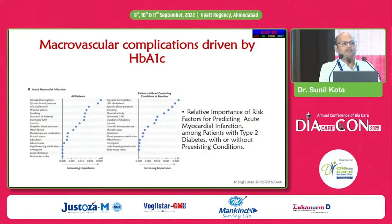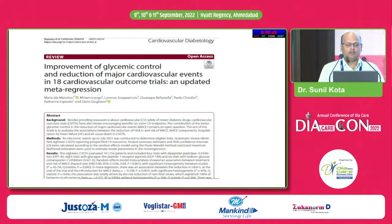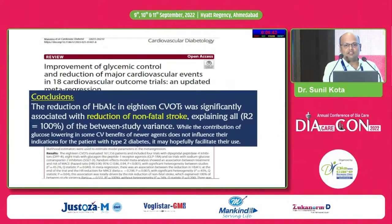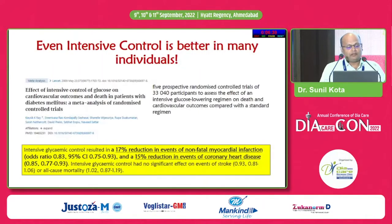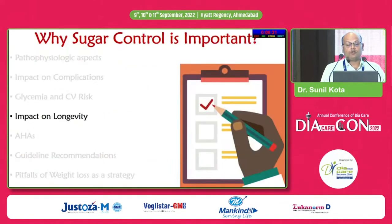A 2018 NEJM study examined different variables as causes of acute myocardial infarction. Glycated hemoglobin stands first, followed by systolic blood pressure, followed by LDL cholesterol. A meta-analysis of 18 trials shows reduction of non-fatal stroke. One trial tells us that early intensive glycemic control is associated with 17% reduction in non-fatal MI and 15% reduction in coronary heart disease.